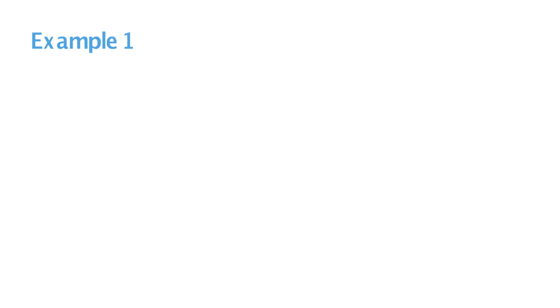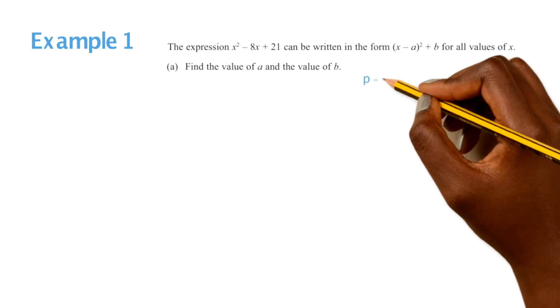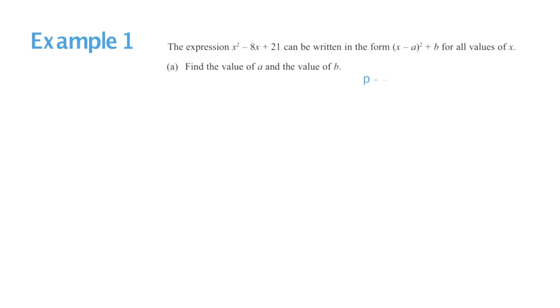Let's crack on with some practice exam questions. In Example 1, we're given the quadratic formula and it wants us to work out the a and b values. The first thing to do is write out your p and q — always make note of whatever your p and q is in the question. In this case our p value is minus 8 and our q is 21.